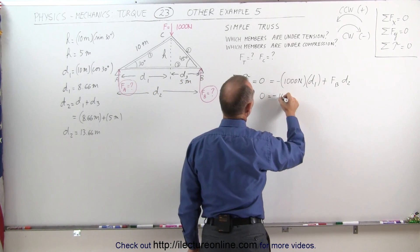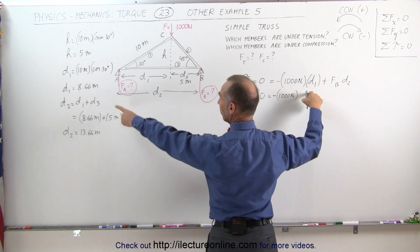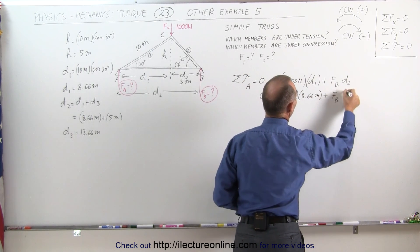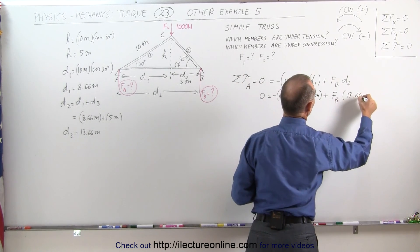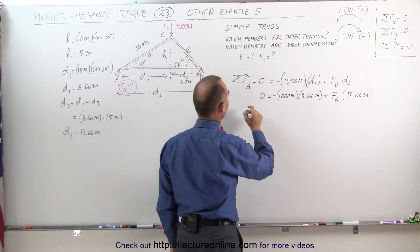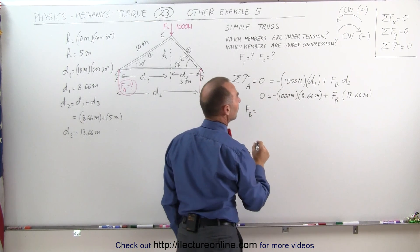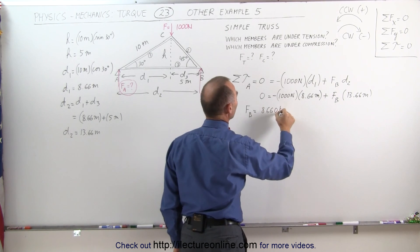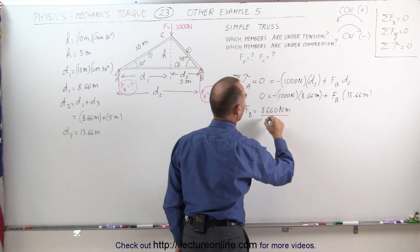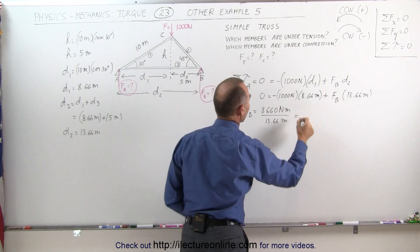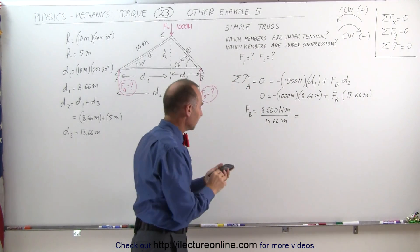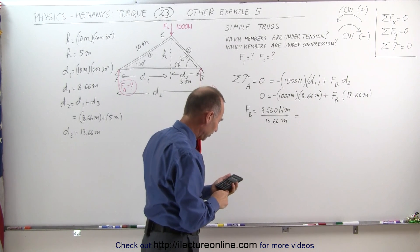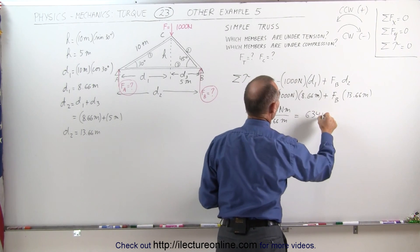Zero equals minus one thousand newtons times D1 — which is 8.66 meters — plus the force at B times D2 — which is 13.66 meters. Solving for the force at B: F_B equals 1000 times 8.66 divided by 13.66. Using a calculator, 8660 divided by 13.66 equals 634 newtons. The force at B is 634 newtons.